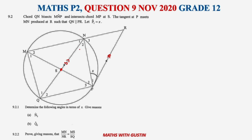9.2.1 asks us to determine angles in terms of x with reasons. For N2: we have parallel lines, so I can already see a Z-angle. N2 equals x. The reason is alternate angles, because PR is parallel to QN.